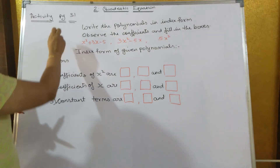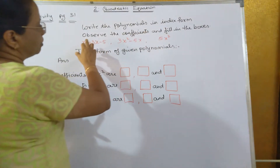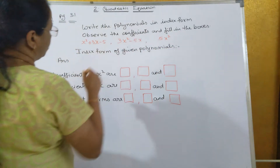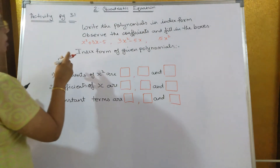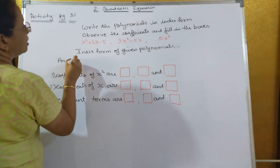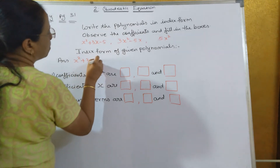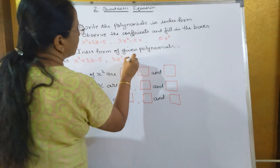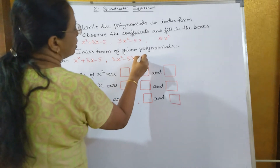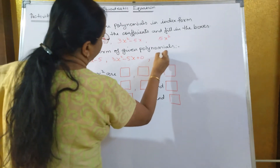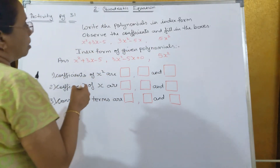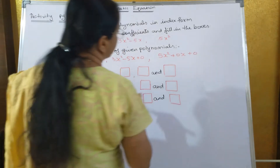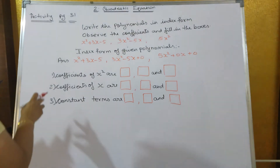Activity page 31: write the polynomials in the index form and observe the coefficients and fill in the boxes. Some polynomials are given — you have to write them in index form. For example, x² + 3x − 5, then 3x² − 5x (and since the constant term is not there, put a 0). For 5x², the x term is not there, so write plus 0x, and the constant term is also not there, so plus 0.